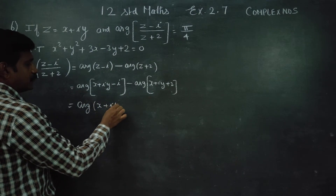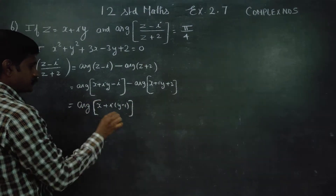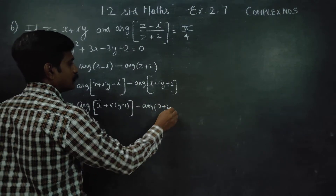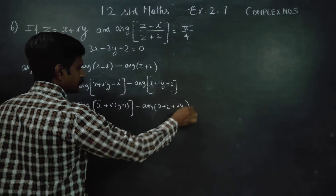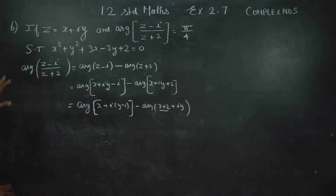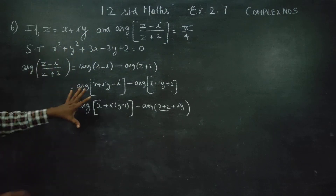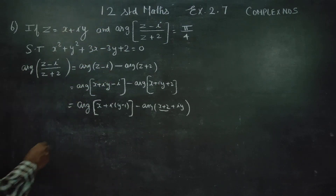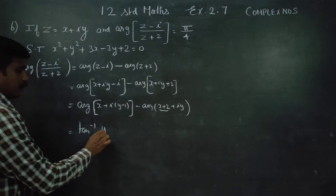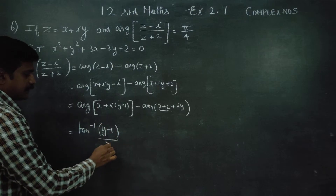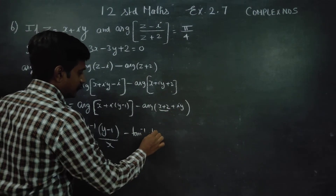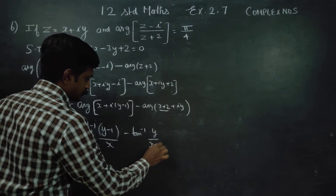This gives us argument of x plus i(y minus 1) for the first part, and argument of (x plus 2) plus iy for the second part. The argument formula is tan inverse of b by a. So we get tan inverse of (y minus 1) by x minus tan inverse of y by (x plus 2).